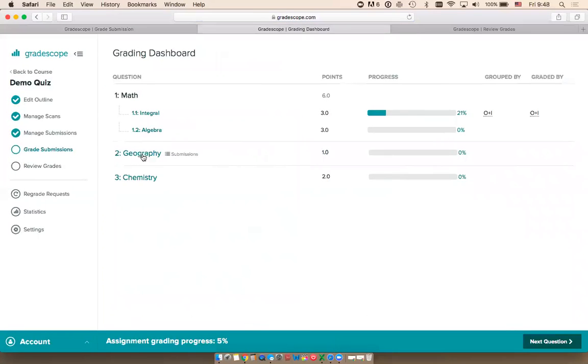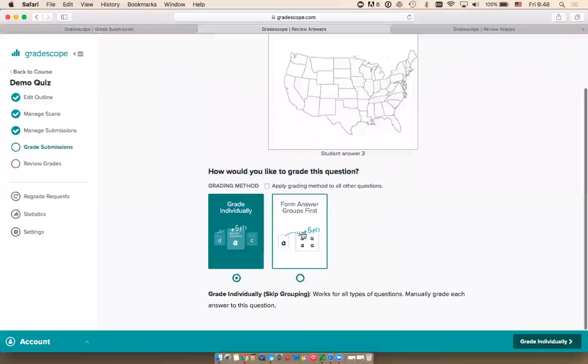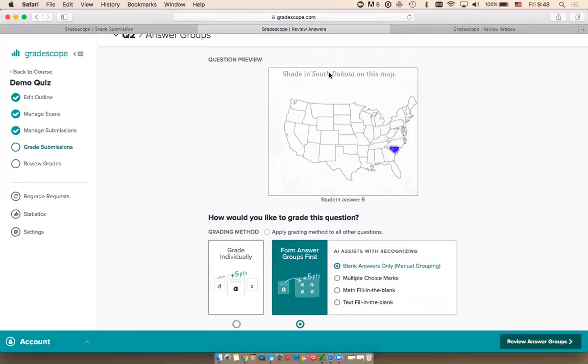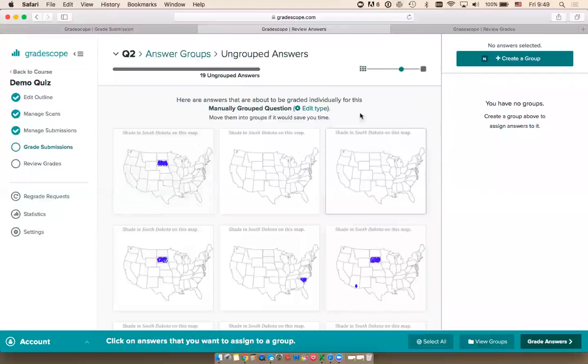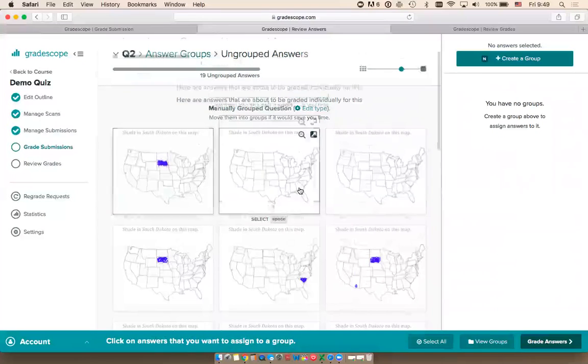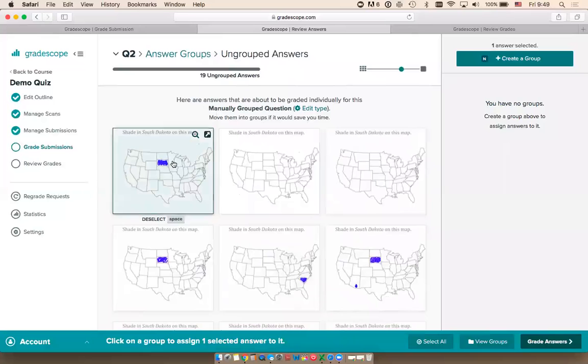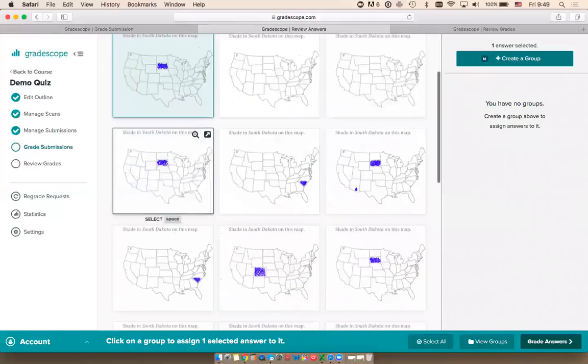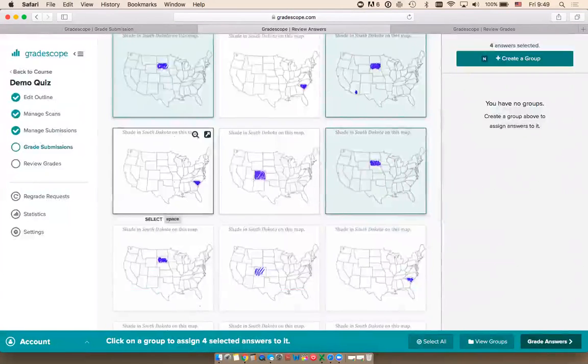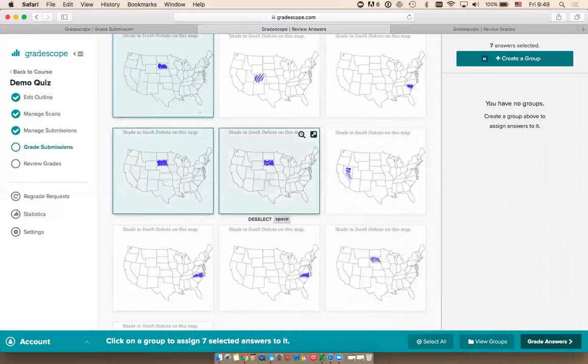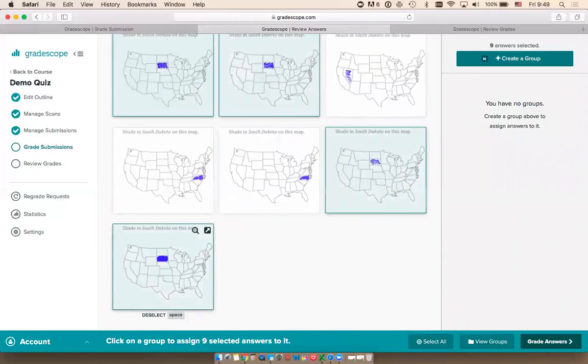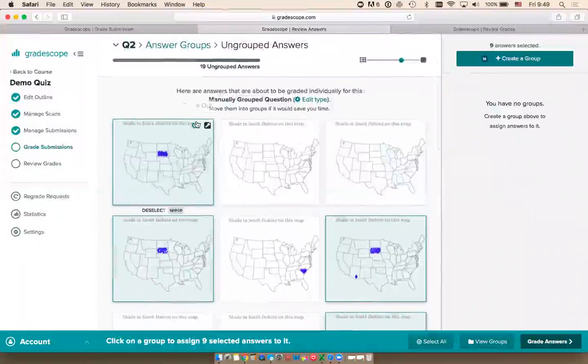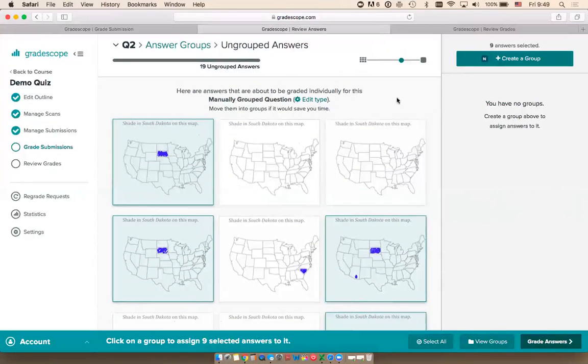For any other type of question that's not multiple choice, fill in the blank math, or fill in the blank text, you can still use the answer grouping features, but you can group the answers manually. In this case, I have a simple geography question where students were asked to shade in South Dakota. I can select manual grouping as my question type. I'm going to see all my students' answers as thumbnails on the left, and I can quickly go through and form groups of similar answers myself. I'm going to select all the students who correctly shaded South Dakota. This can be very useful for chemistry diagrams, Lewis structures, charts, graphs, tables, where you can easily see similar answers and group them together.